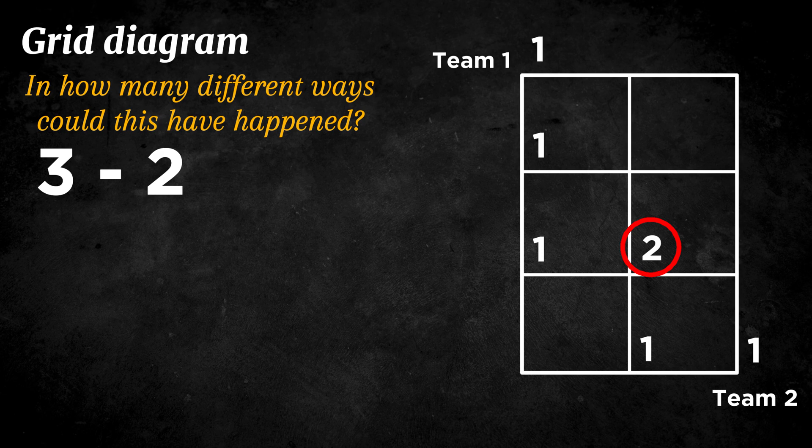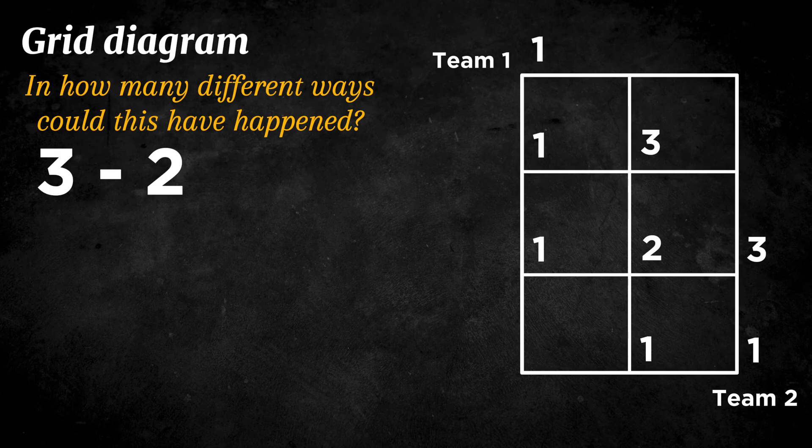Now we can just do it for the whole grid, and on the top right, we should get our answer. And the answer is 10, so the match could have happened in 10 different ways.